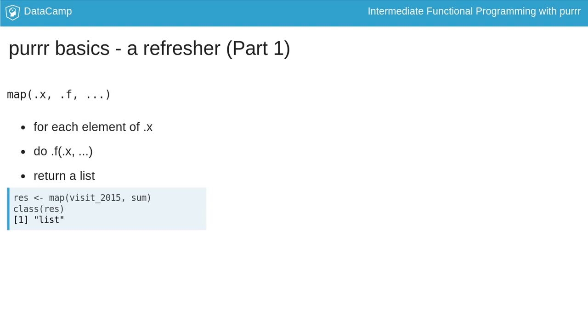First, let's see the map function. The map function runs the .f function on each element of .x and always returns a list. Here, we are mapping the sum function on the list visit_2015.